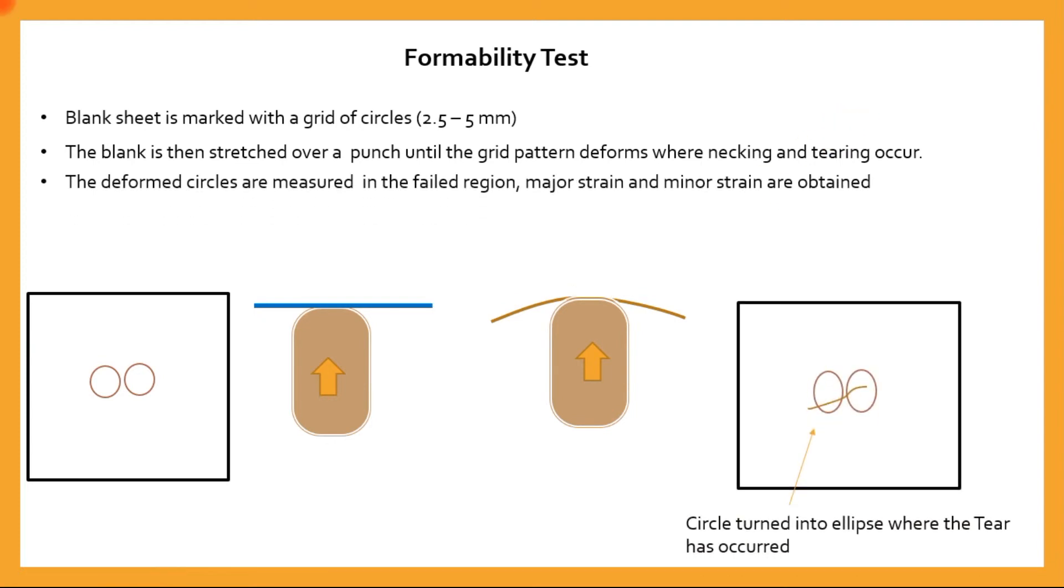Naturally, the circles will get deformed. As you can see here, the circles will become ellipses. These are deformed circles where the tear has occurred. If we measure the major axis and minor axis of these ellipses and compare it to the diameter of the circle,